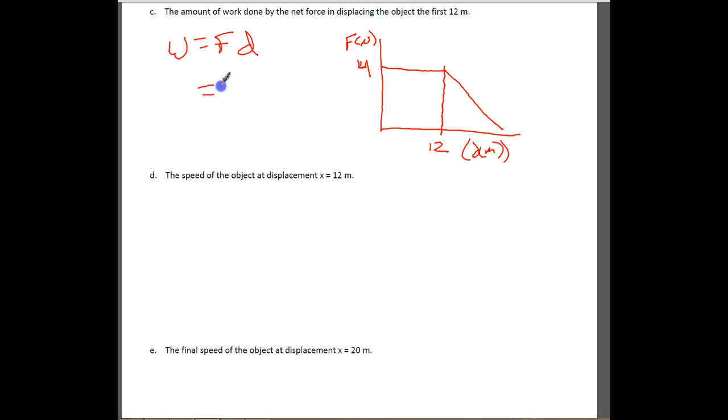And so all we have to do here is just take 4 times 12, and you would end up with 48 joules. So it's really just the area underneath the line here, bound by the 12 and by the 0. So it's just the area of this rectangle that you have.